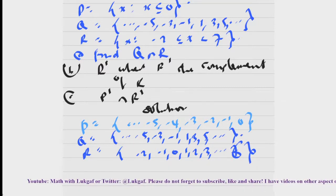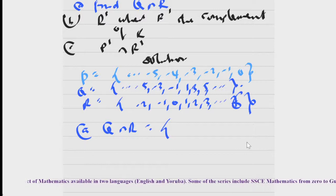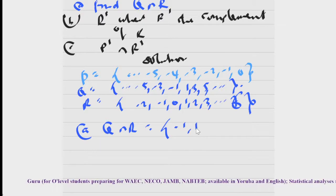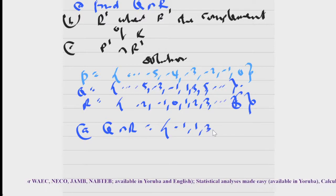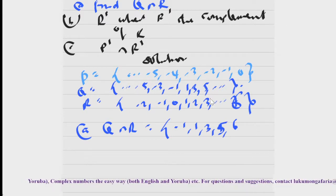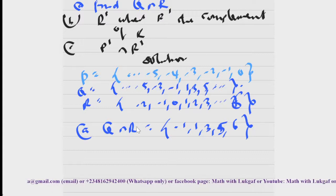So number one, we have to find Q intersection R — the common elements to both of them. Minus two is not in Q. We have minus one, one, three. Four is not in Q. We have five. And six — because the dots in Q mean we continue to have elements like six, seven, eight, nine, and R goes up to six. So six is also common to both of them. Your Q intersection R = {minus one, one, three, five, six}.